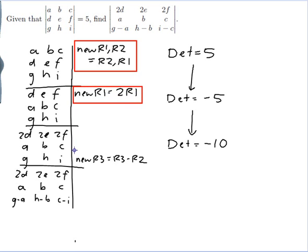And then what we've done is we've added a multiple, well subtracted a multiple of one row from another. And that doesn't do anything to the determinant. So the determinant of this matrix is still minus 10.